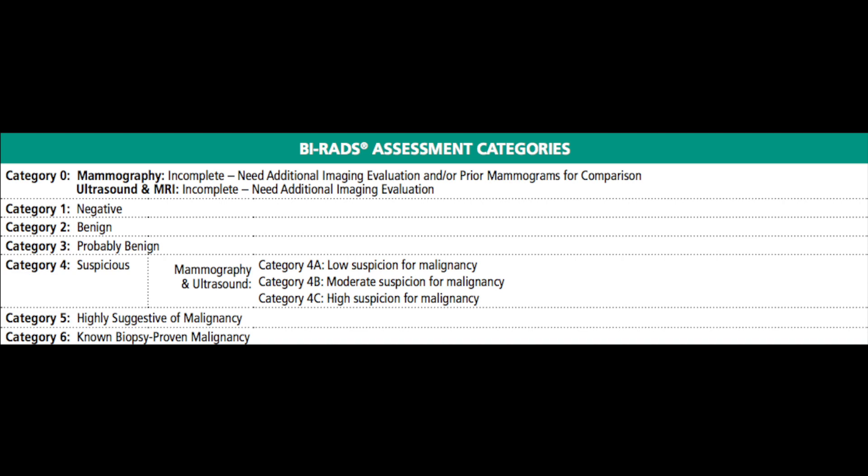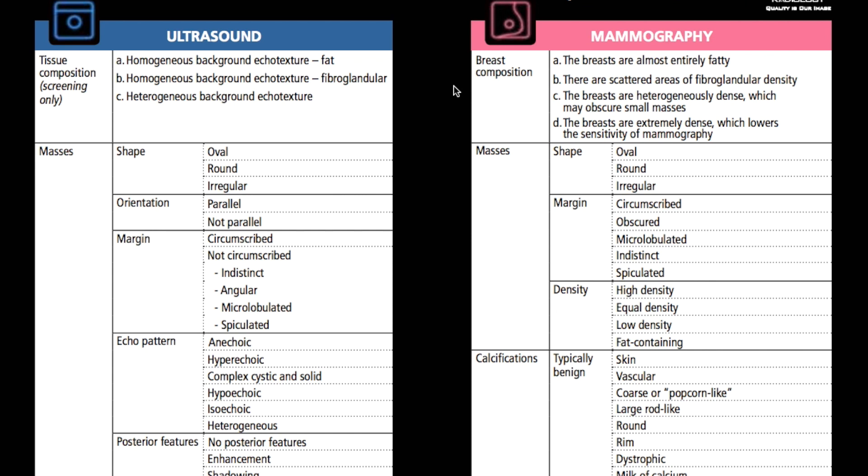It's important to know that BI-RADS 0 and BI-RADS 2 are probably going to be the most common BI-RADS categories used when doing a diagnostic mammogram. After that brief introduction, let's move on to the actual BI-RADS lexicon and what it means to use BI-RADS descriptors.